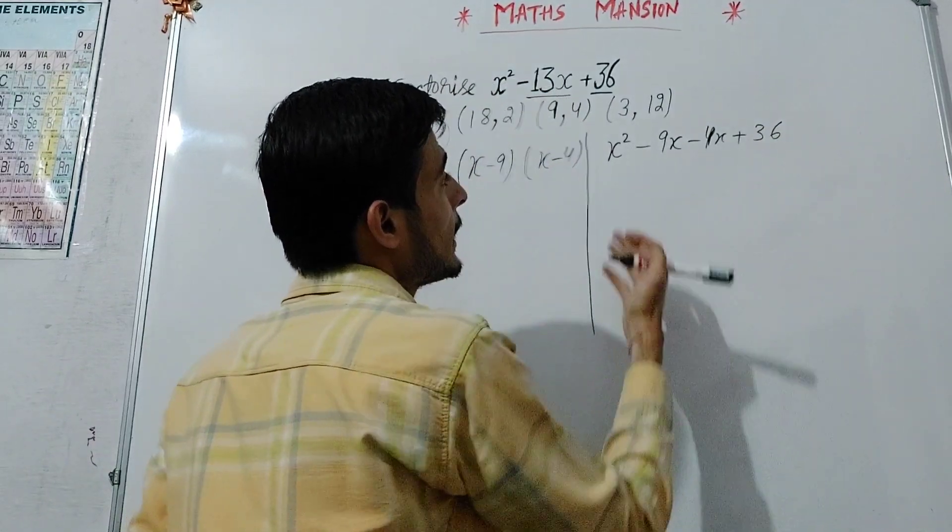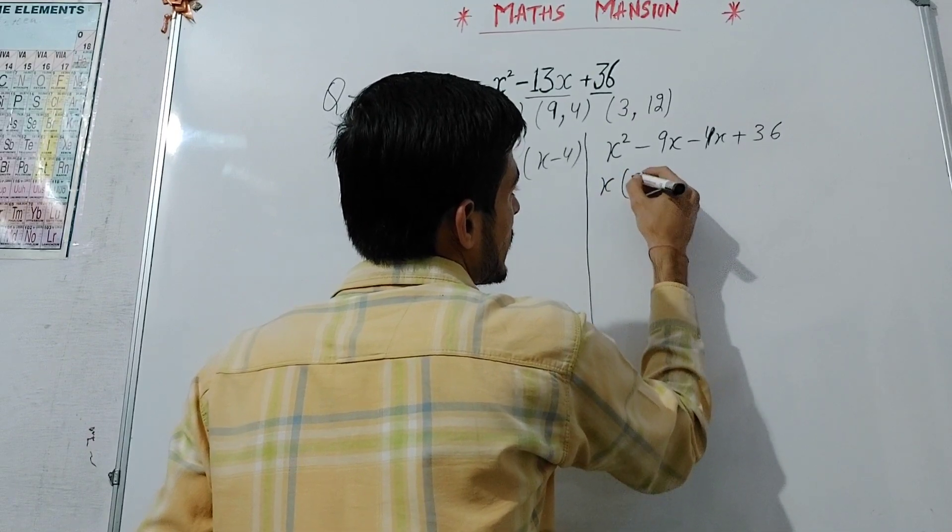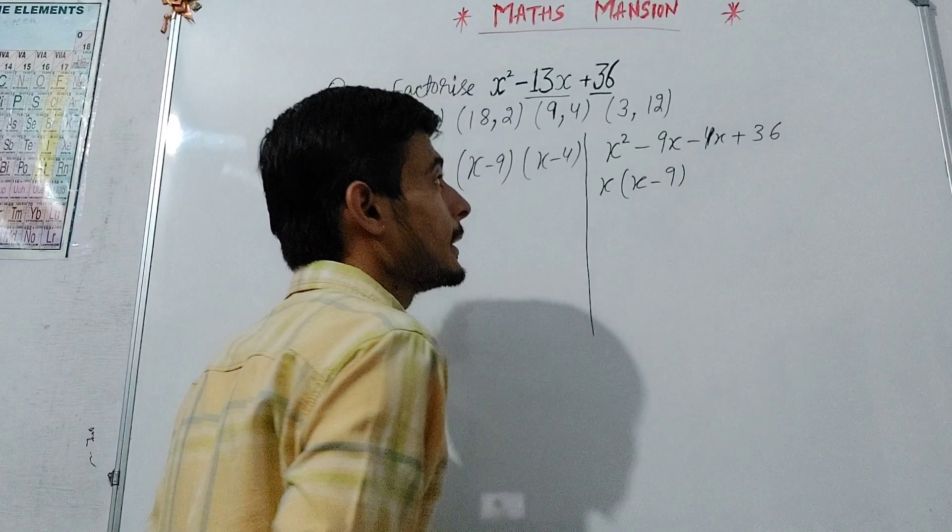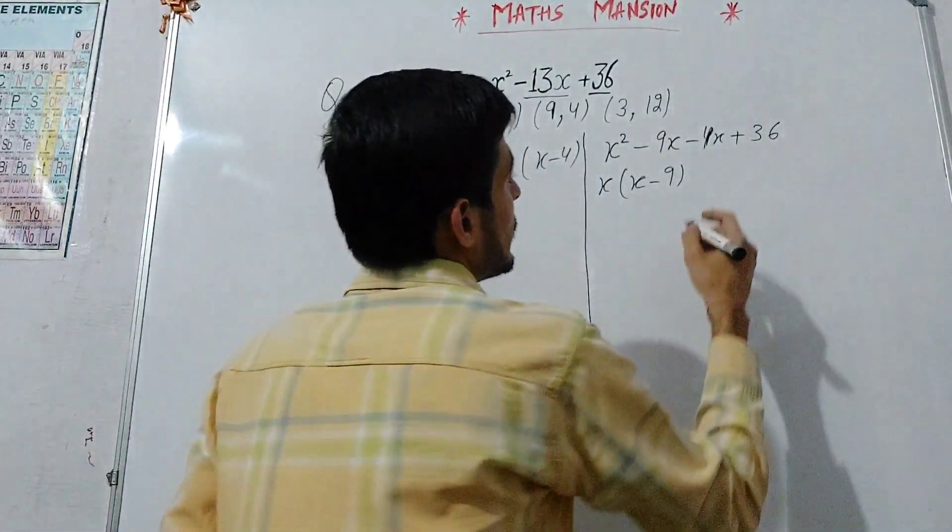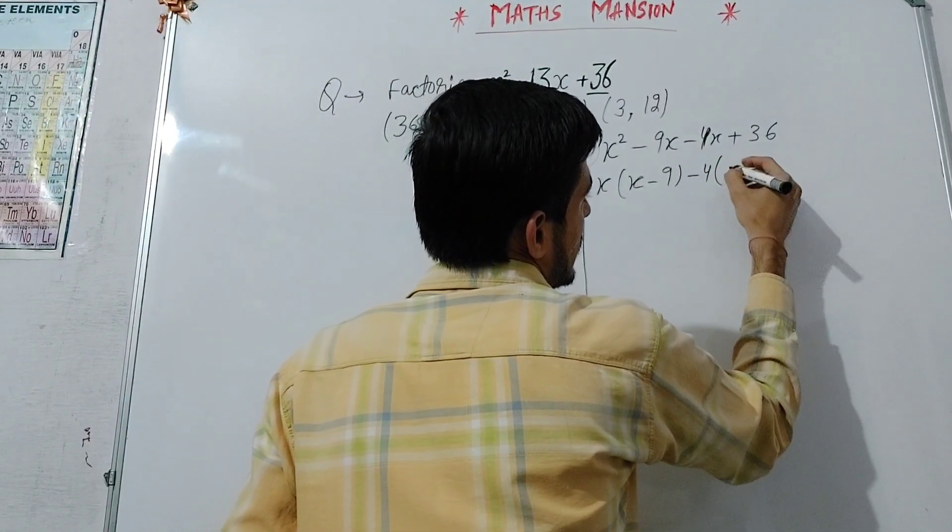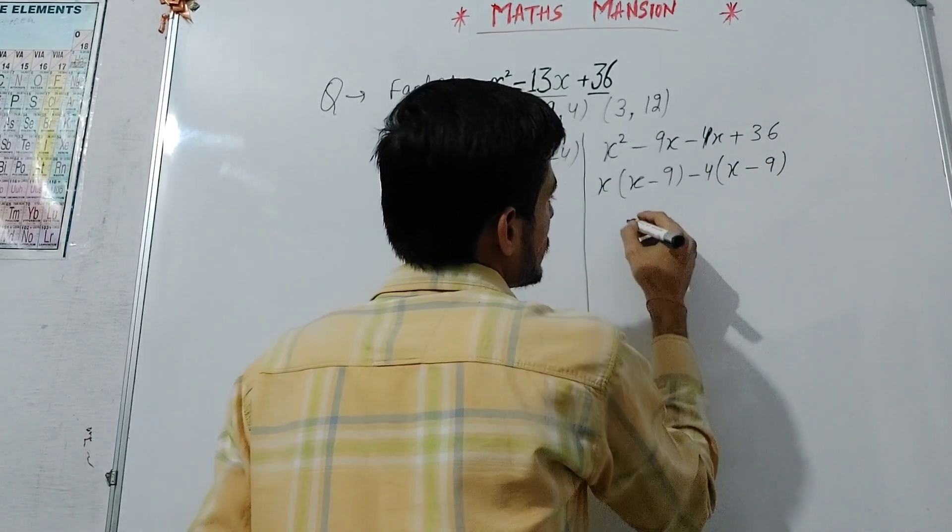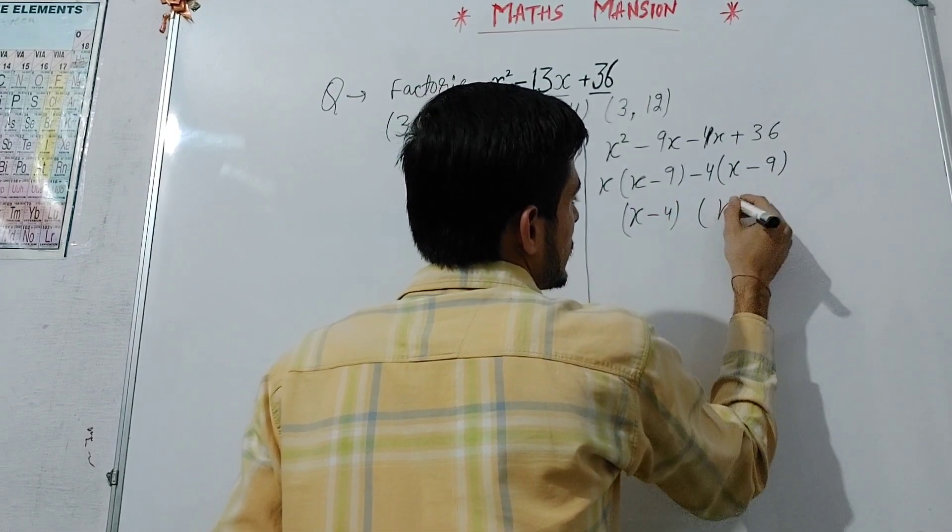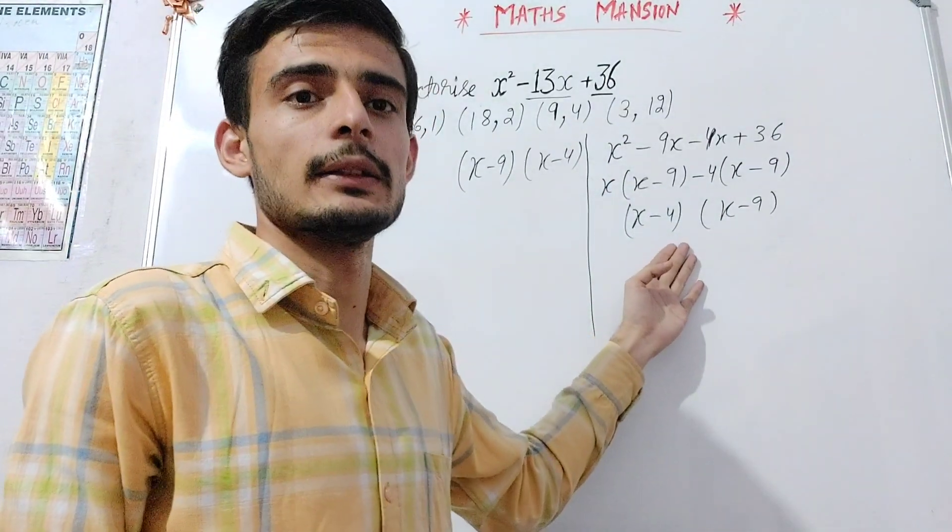So we write x² - 9x - 4x + 36. Now, taking x common out of these two terms, we get x(x - 9). And taking -4 common from these two terms, we get -4(x - 9). This can be reduced to (x - 4)(x - 9). So this is our final answer.